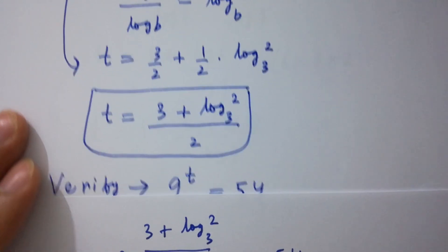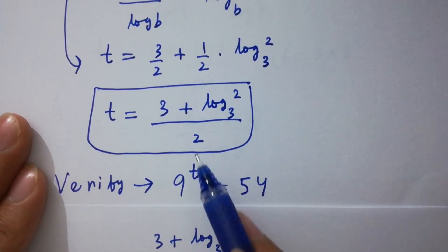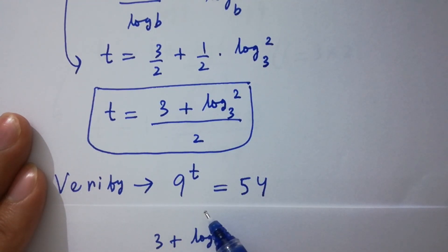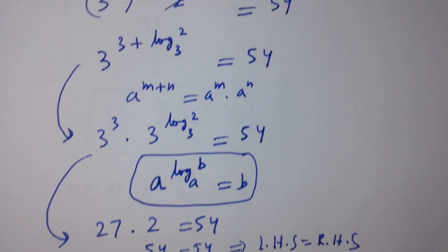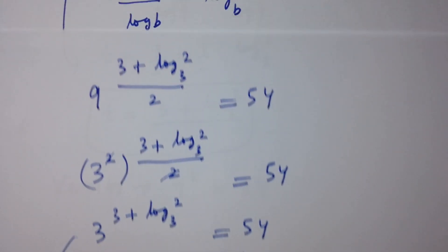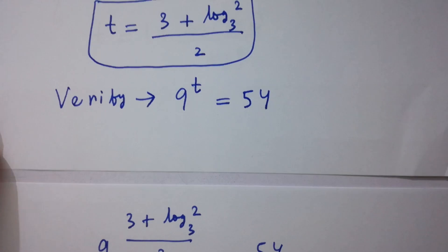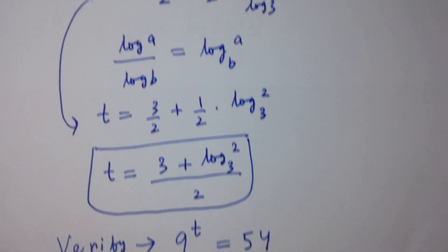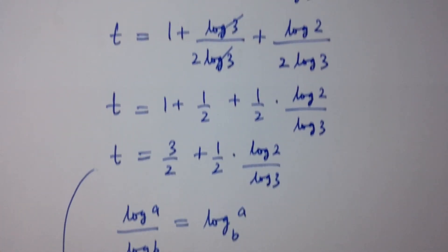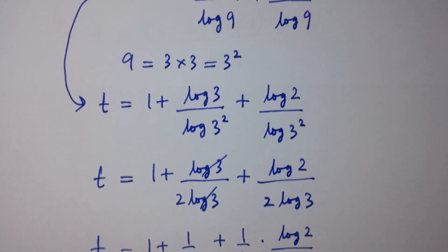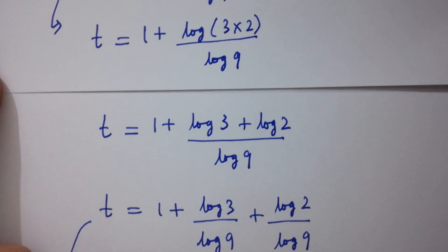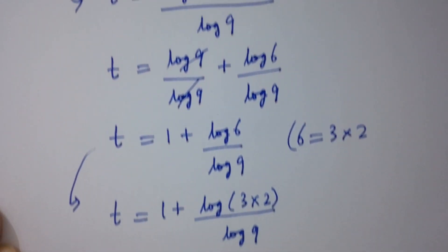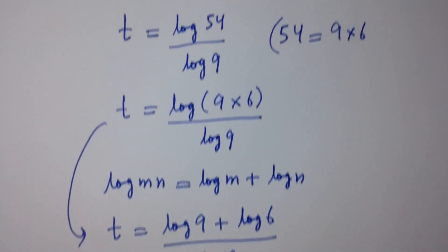Left hand side equals right hand side, which shows that the value of t satisfies the equation 9 to the power t equals 54. Thanks for watching this video, please subscribe to the channel to get notifications of new videos, and don't forget to share with your classmates and friends so they also benefit. You can also visit the playlist to learn more.